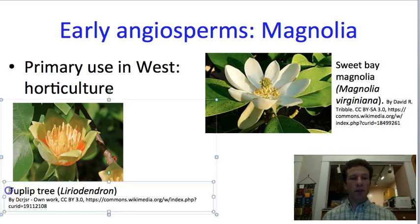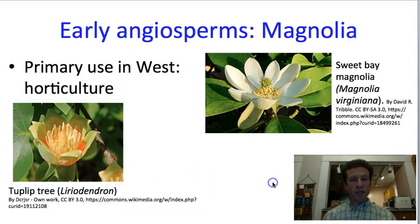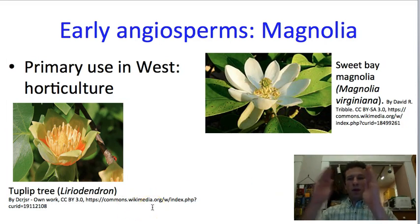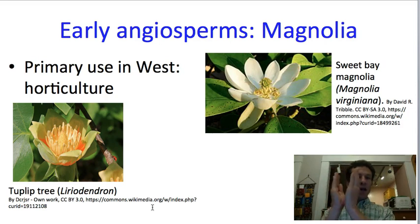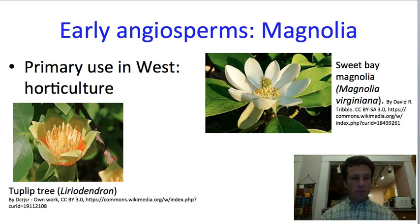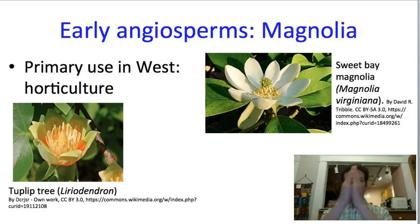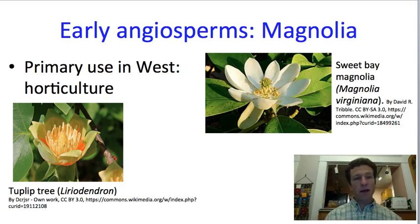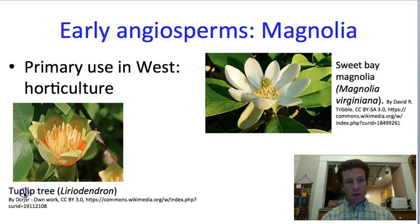This is the tulip tree — Liriodendron — which you may remember from your twig identification exercise. It's one of the species commonly included, and you might have found a twig with two bud scales that came together in a valvate pattern. Those twigs belong to the tulip tree species.